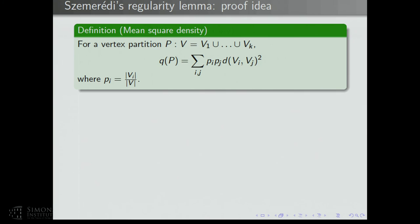To prove the regularity lemma, it's helpful to introduce the mean square density of a partition. For a vertex partition P, this potential function is a weighted average of the squared density between pairs of parts — where p_i is the fraction of vertices in part V_i, and the sum of p_i * p_j adds up to 1. So the mean square density is just a weighted average of density squared between pairs of parts.